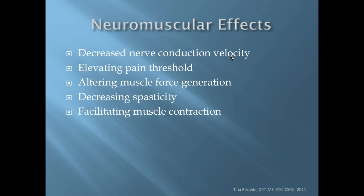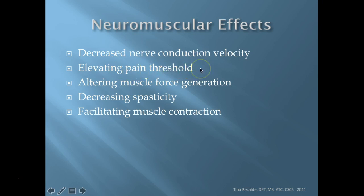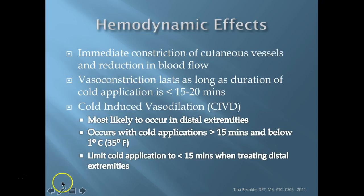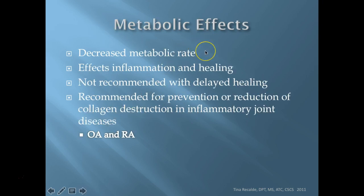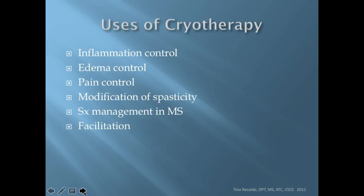Cold decreases nerve conduction velocity, which is good for an inflamed nerve, but be aware that for a post-op nerve transplant where the goal is to increase nerve conduction velocity, you absolutely do not want to use ice. Cold also elevates the pain threshold - another way of saying it's an analgesic. It alters muscle force generation, decreases spasticity, and facilitates muscle contraction. Metabolically it decreases the metabolic rate, affects the inflammation and healing process, and is not recommended with delayed healing since vasoconstriction doesn't promote healing. It is recommended for prevention and reduction of collagen destruction in inflammatory joint diseases such as osteoarthritis and rheumatoid arthritis.